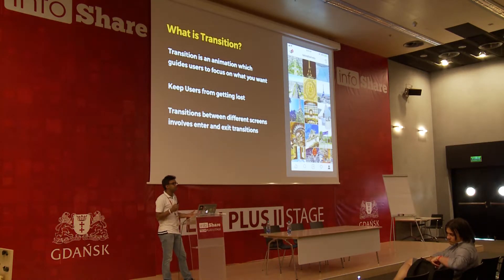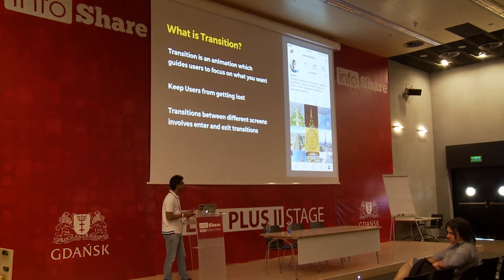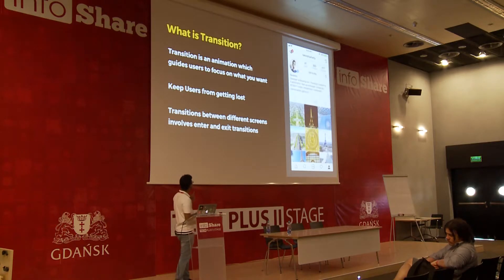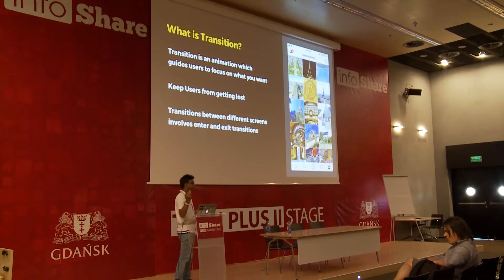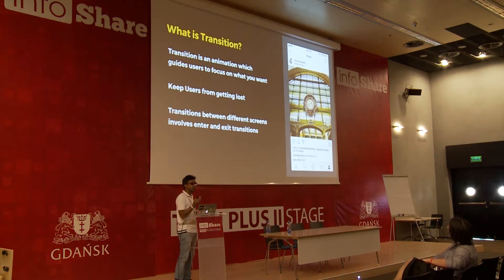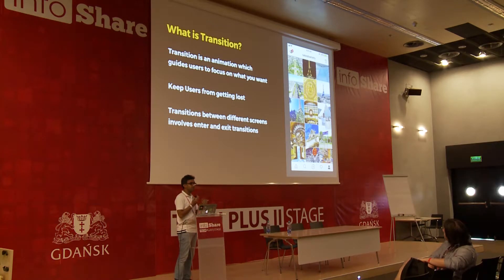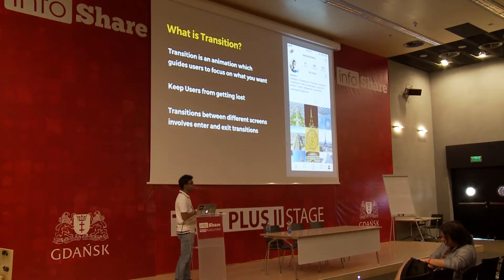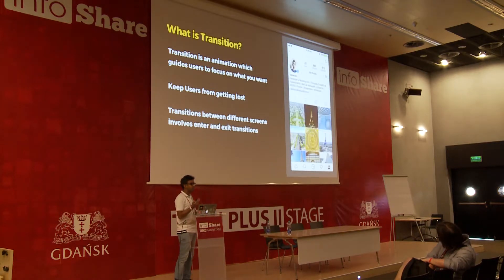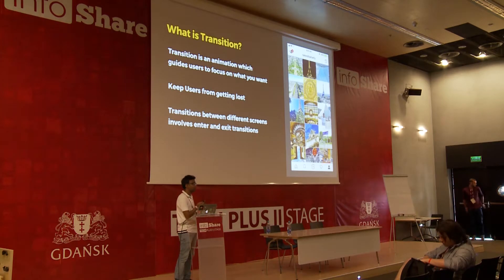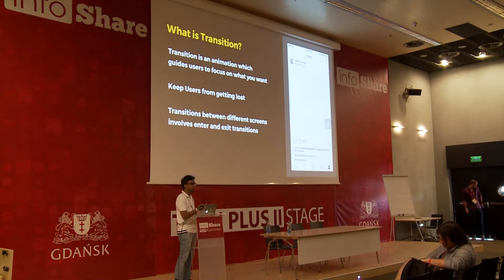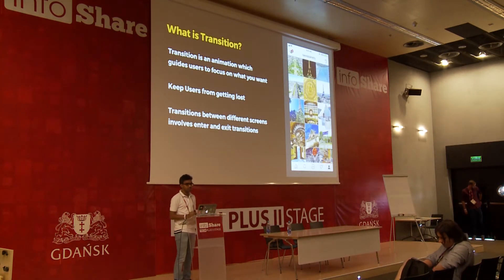When you transition between two screens, there are two sets of animations. One is the enter animation and the exit animation. As you can see in the app, the photo screen is entering into the viewport and the grid screen, which is the profile screen, exits from the viewport. For any set of animation, you have these two smaller animations which you need to do right so that the entire transition works well.